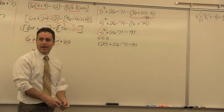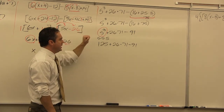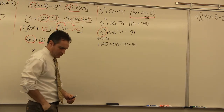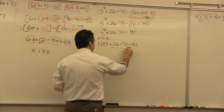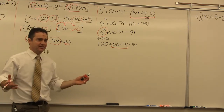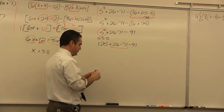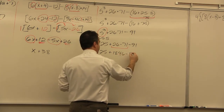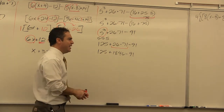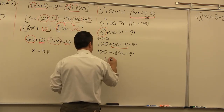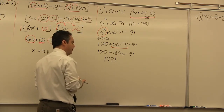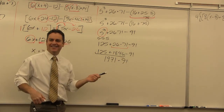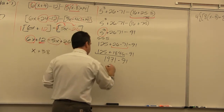We've taken care of parentheses and exponents. Next step: multiplication and division left to right. We have 26 × 71 = 1846. Then addition and subtraction left to right: 125 + 1846 = 1971. Then 1971 − 91 = 1880.